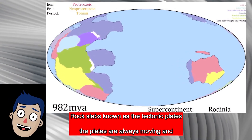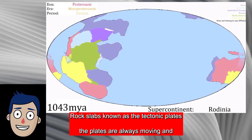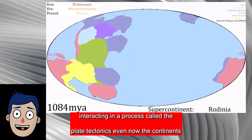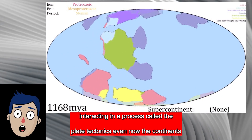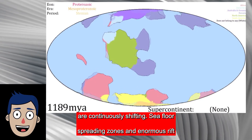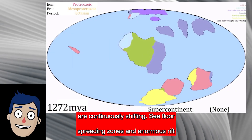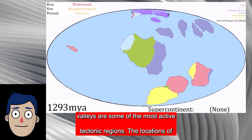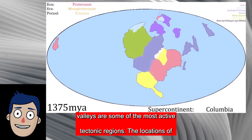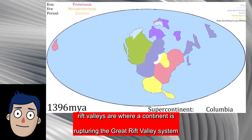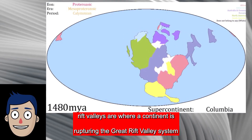We now understand that the continents are supported by enormous rock slabs known as tectonic plates. The plates are always moving and interacting in a process called plate tectonics. Even now, the continents are continuously shifting. Seafloor spreading zones and enormous rift valleys are some of the most active tectonic regions.